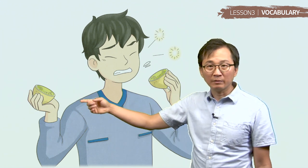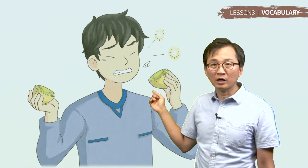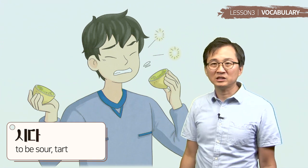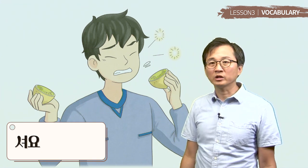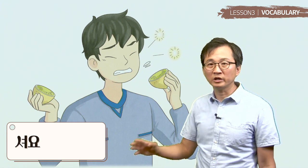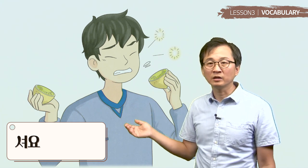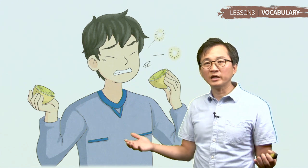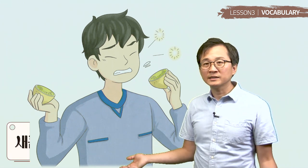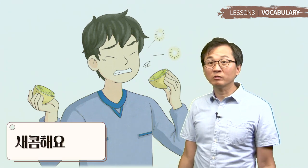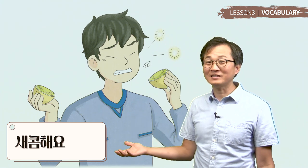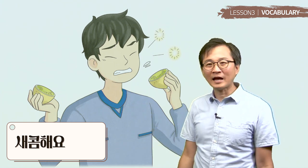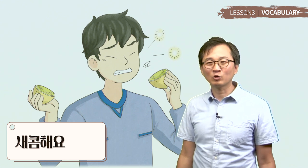그 다음에 이건 레몬이에요, or lime. 그러면 how do they taste? 시다. 셔요, or 시어요 — either way is fine. 근데 some foods are sour and tasty. 그러면 새콤해요. Pleasantly sour 그러면은 새콤해요.